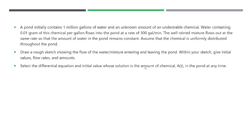In this question we have a pond that initially contains a million gallons of water with some amount of chemical in it. You have water containing 0.01 grams of chemical per gallon that's flowing into the pond at a rate of 300 gallons per minute.